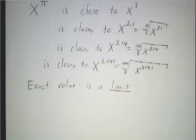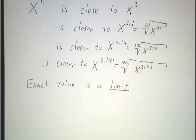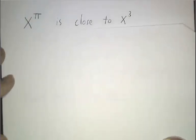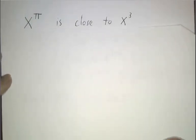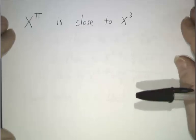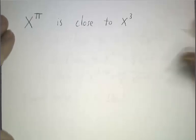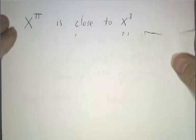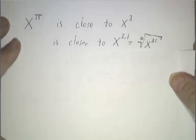The last thing is what if we take a power that's not a fraction. So what if we want to understand x to the pi? Well, we have to do this with approximations. And these kinds of approximations are at the core of calculus. So we know that pi is close to 3, so you figure that x to the pi should be close to x cubed.